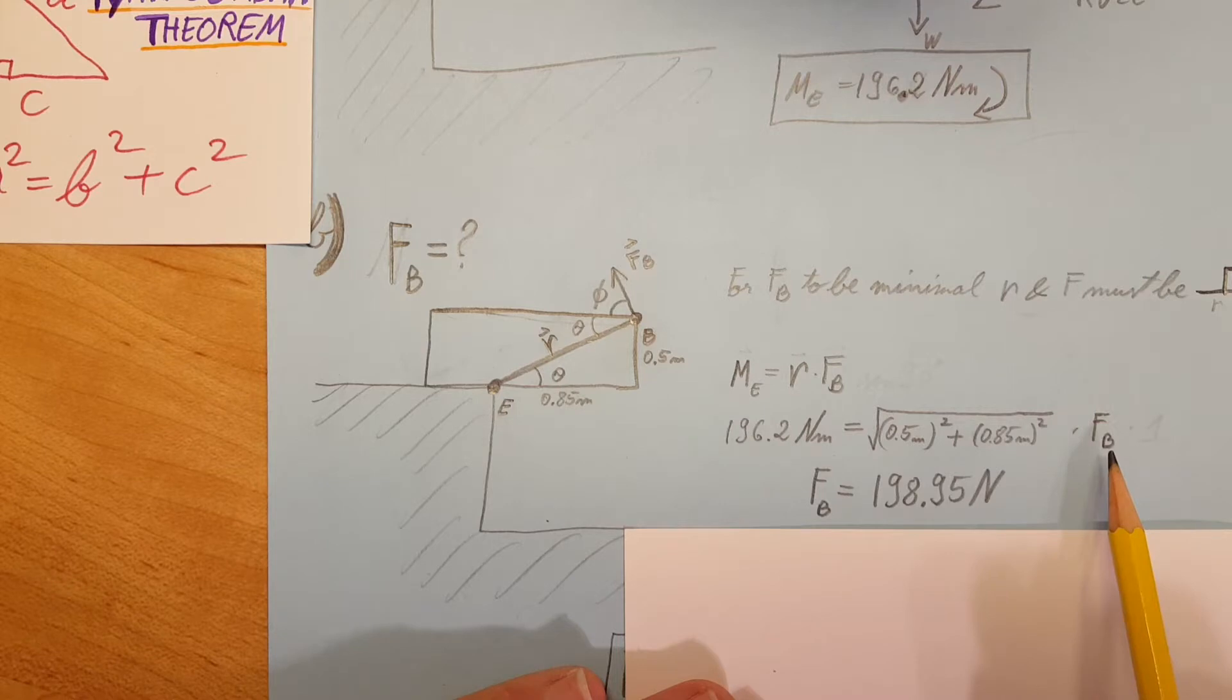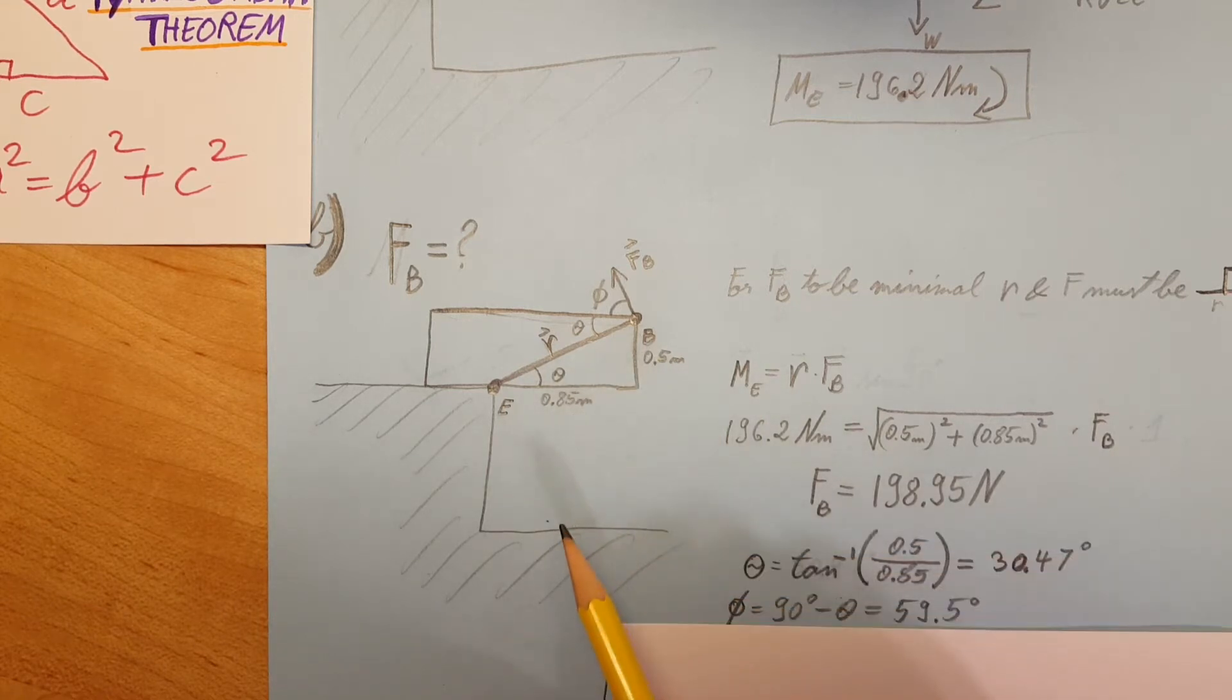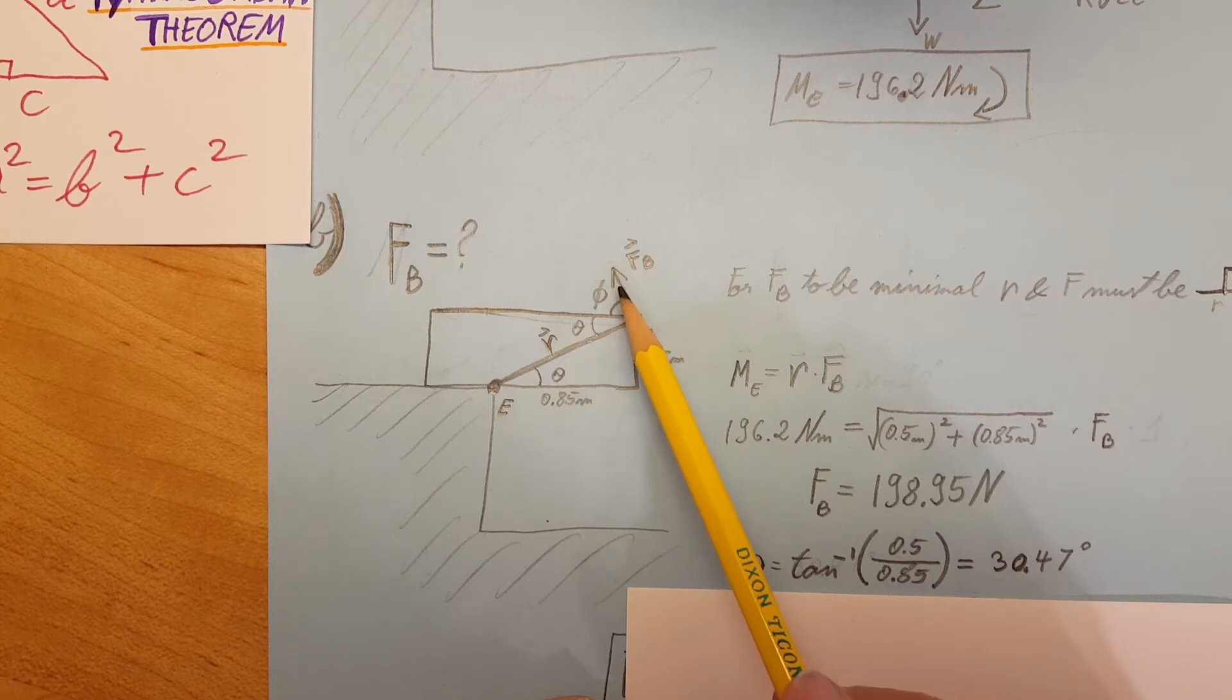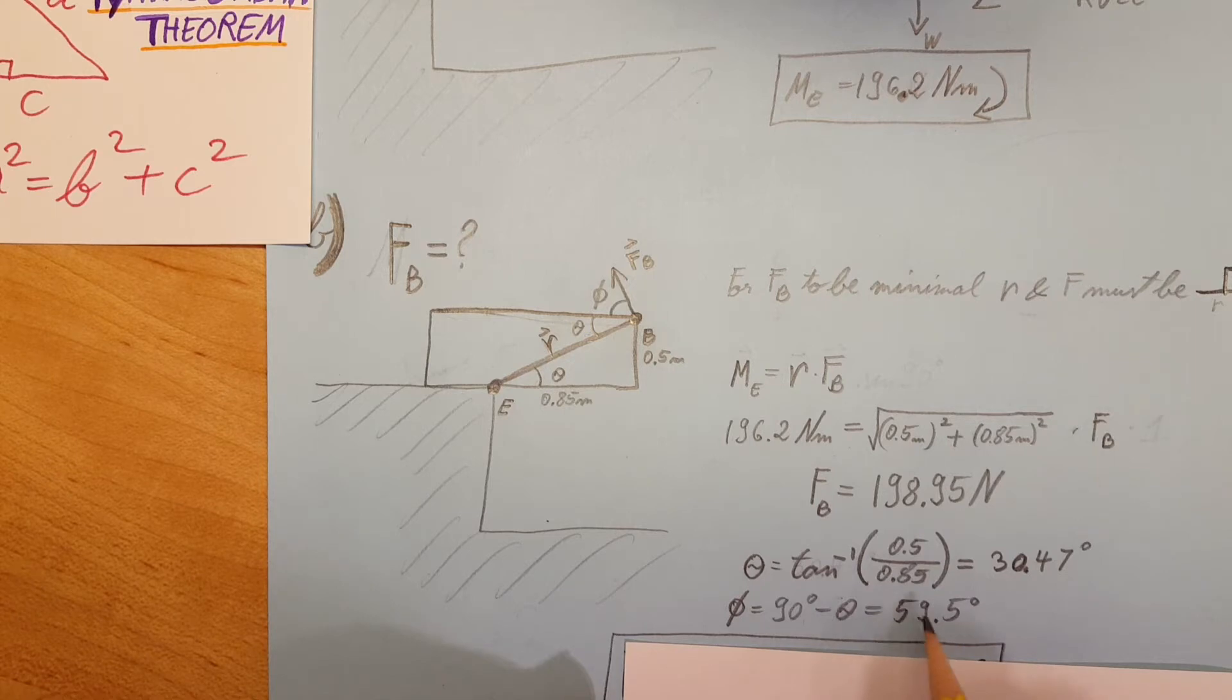Now in order to be able to write this direction, we're going to use this triangle again. We're going to use this side with this side and plug it into an inverse tangent, and we're going to get a value of 30.47 degrees, which is this angle right here, theta. Since this is theta, we know that this one also is theta. Now between r and F we have 90 degrees, so by subtracting theta, 90 minus theta equals 59.5 degrees.